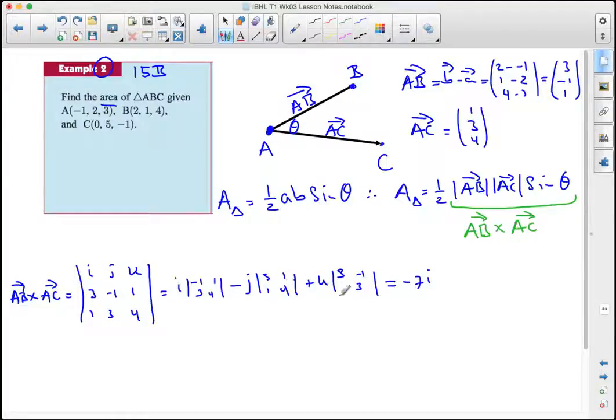12 take 1 is 11 with a negative up front, negative 11j, 9 take negative 1 is 10. So here we have the vector negative 7, negative 11, 10.